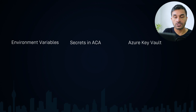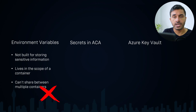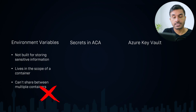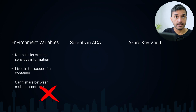Now if you compare environment variables and secrets, environment variables are not built for storing sensitive information. Yes, you can store key-value pairs there, but they're not built for storing sensitive information. And because of this, it is possible that you may accidentally expose these secrets. Also, the problem with environment variables is that they live in the scope of a container. A container app contains multiple containers, and environment variables live inside those containers, so it is not possible to share an environment variable between multiple containers.